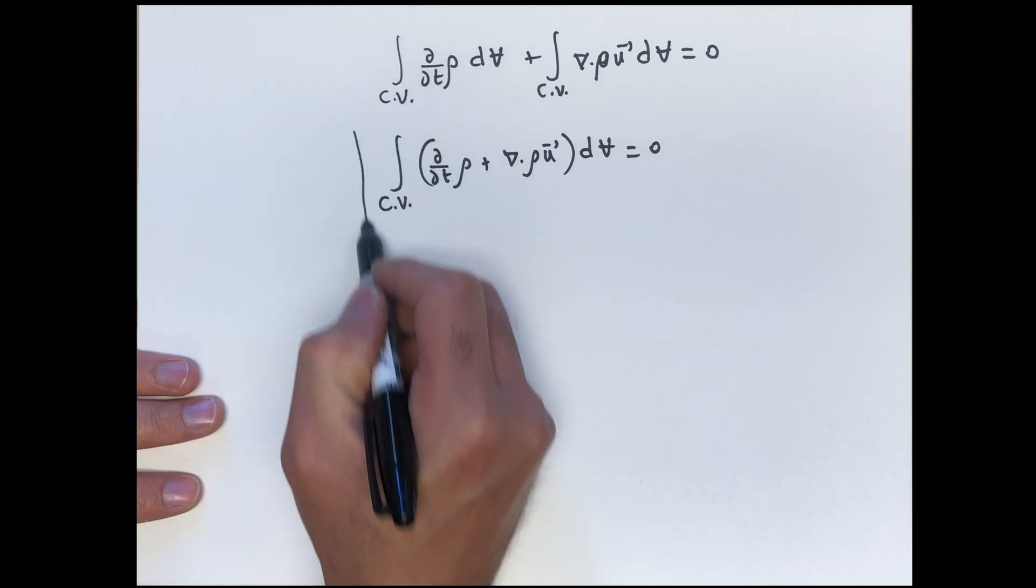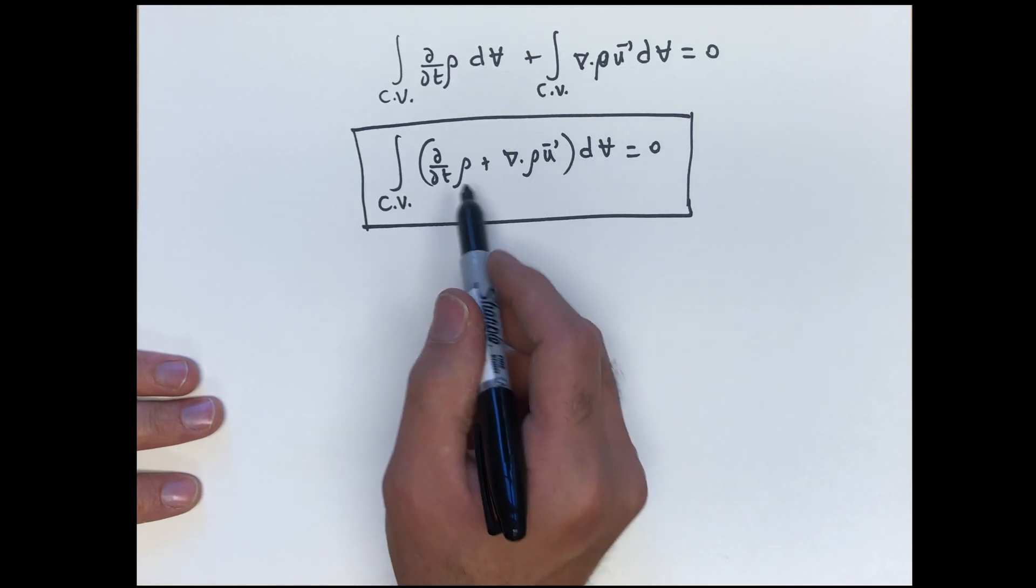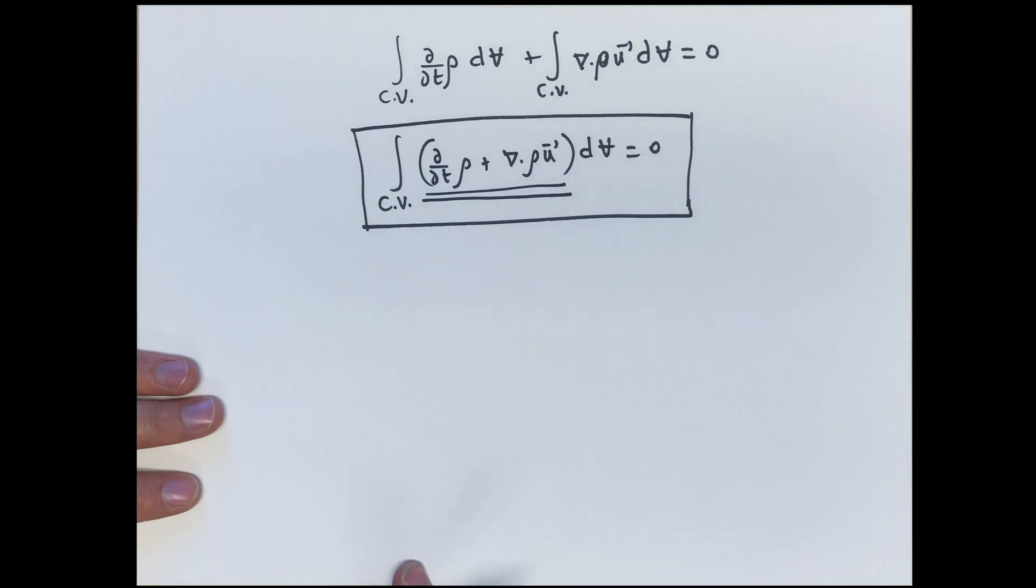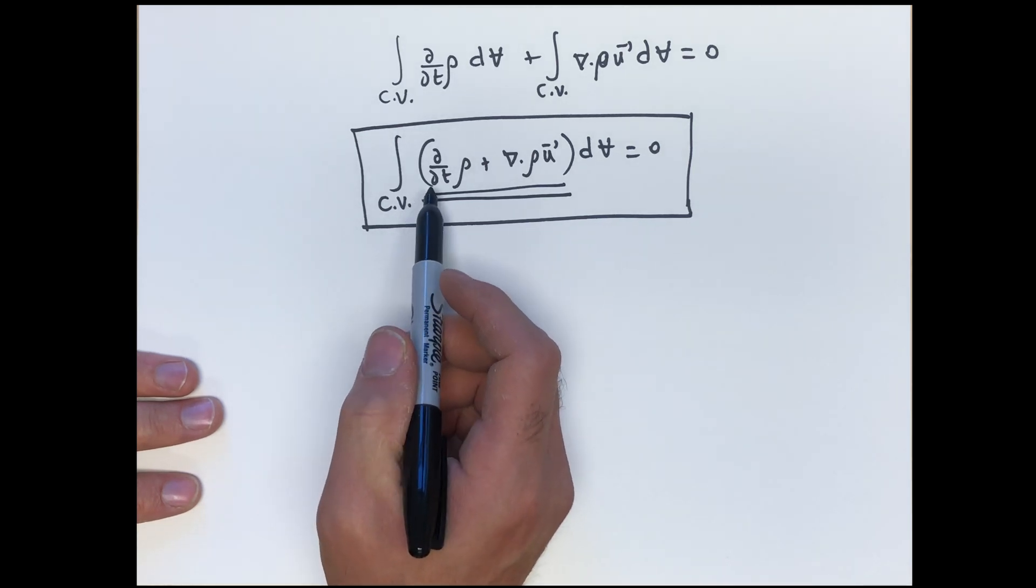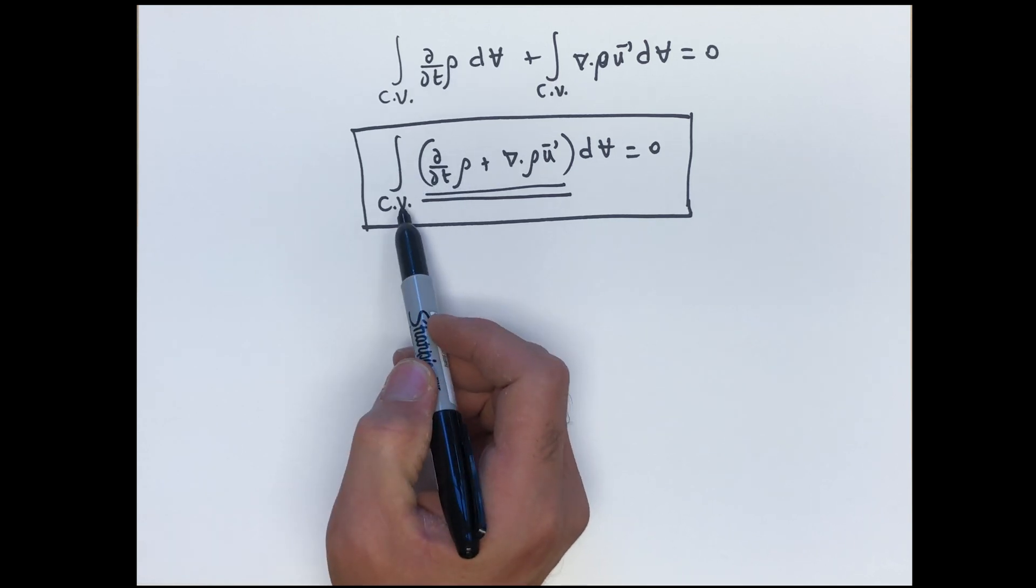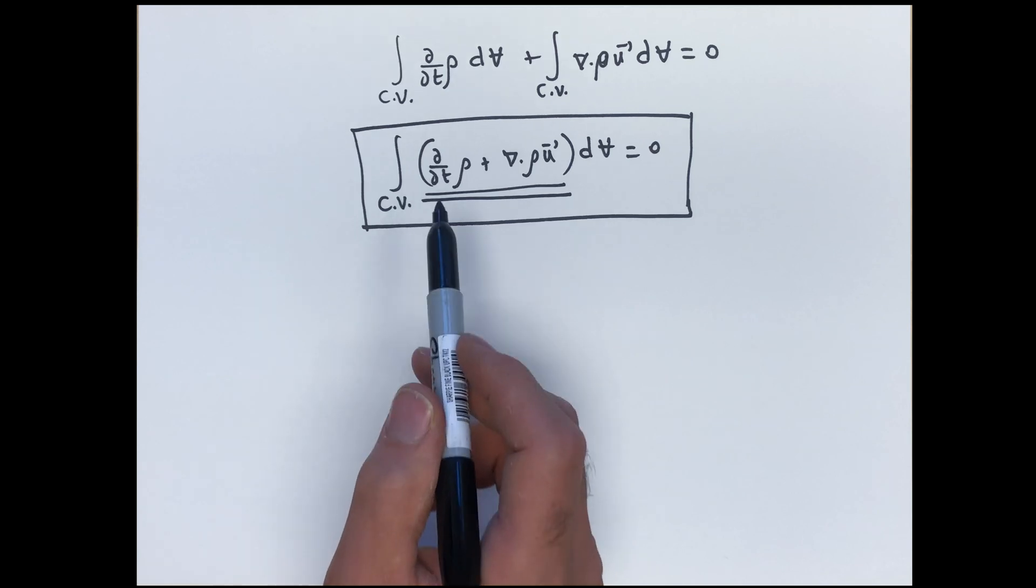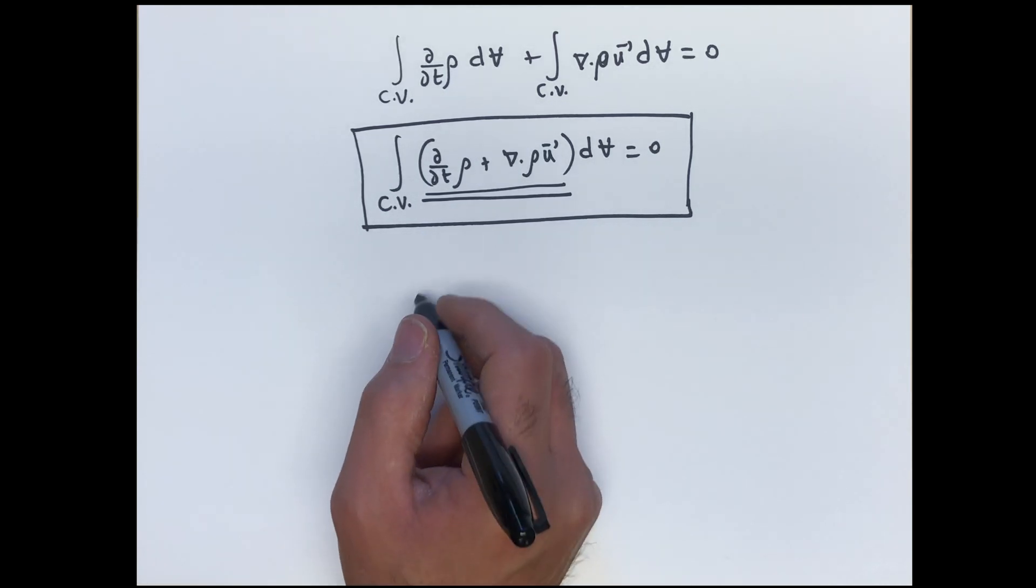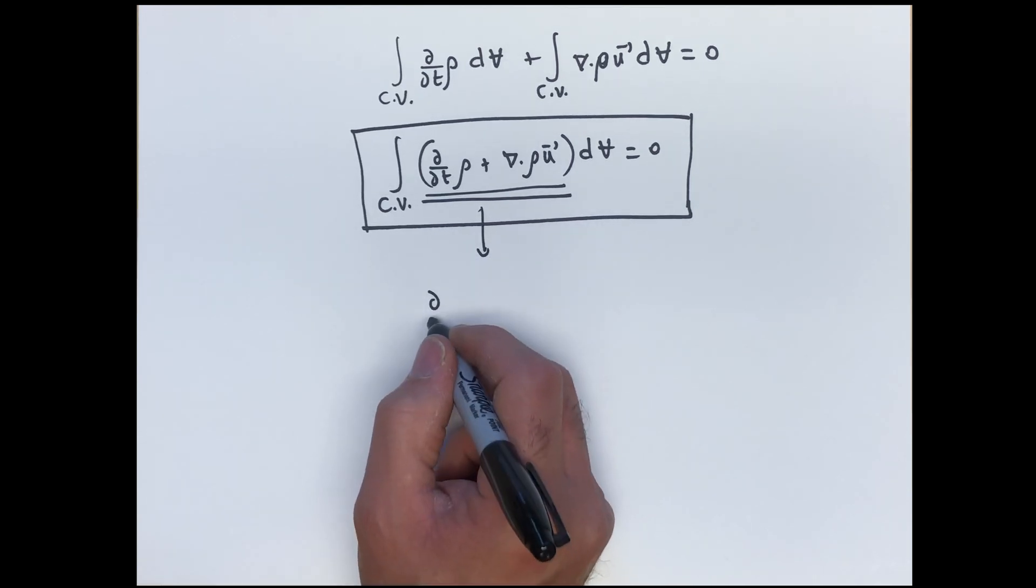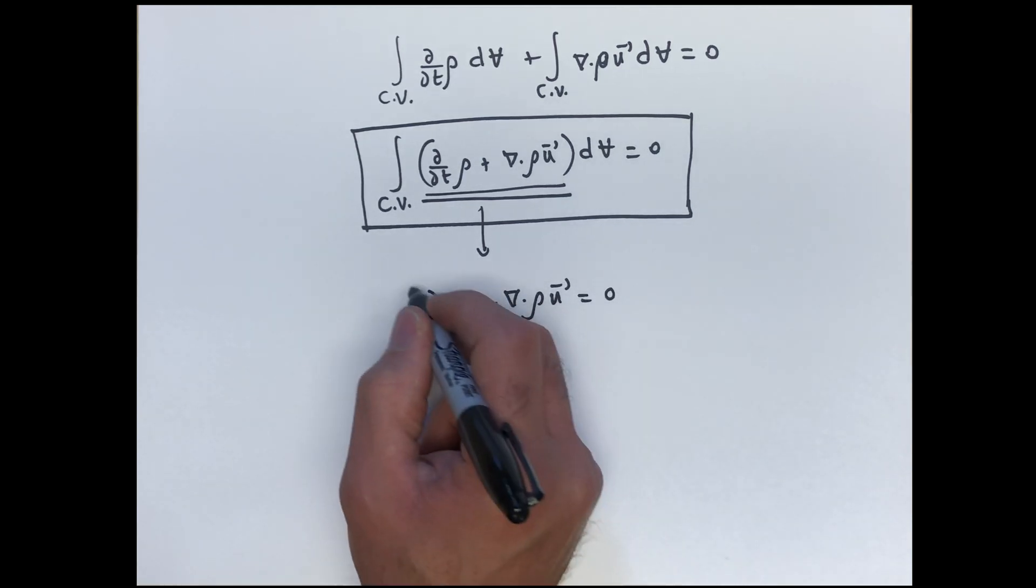Now I'm going to make a claim here and say that the only way that this is equal to zero is if the integrand is equal to zero. Why can I make that claim? Well, remember when we selected our control volume, we didn't specify what the control volume looked like. Although yes, we derived it for a rectangular control volume, that was just for the sake of illustration, but we could have derived it for an arbitrary control volume, and this will hold for an arbitrary control volume. And therefore, if this is true for any control volume, then it must be that the integrand is identically equal to zero. And with one jump, you can go from the integral form to the differential form of the continuity equation.